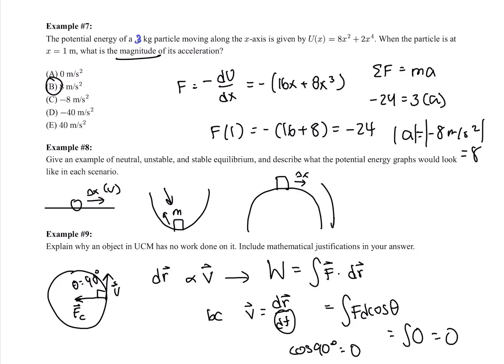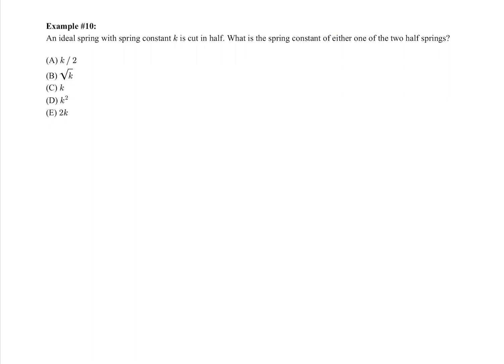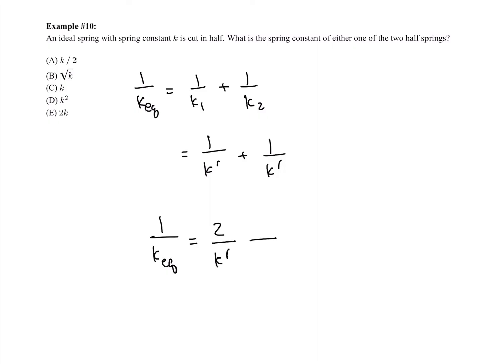Problem 10: an ideal spring with constant k is cut in half. Springs in series follow 1 over k_eq equals 1 over k1 plus 1 over k2. Cutting the spring in half gives two springs with the same constant k'. So 1 over k_eq equals 2 over k'. That means k' equals 2k_eq, so each half-spring has a spring constant equal to twice the original spring constant. The answer is choice E.